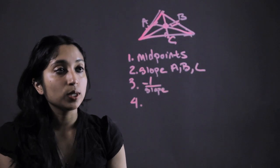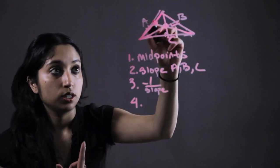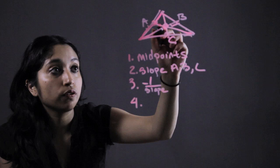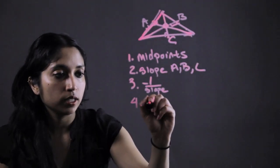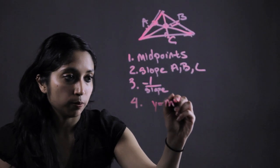Fourth, because we now have a point (the midpoint) and the slope of that line, we solve for the equations of these perpendicular bisectors by plugging into the standard equation y equals mx plus b.